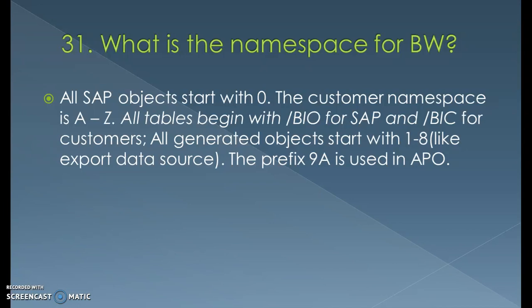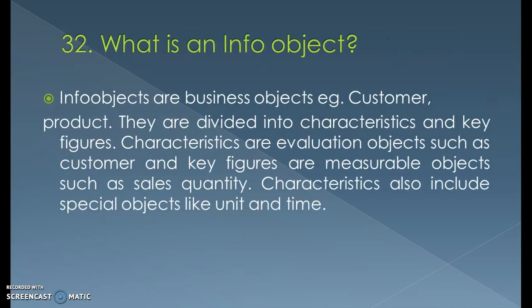All generated objects start with 1 to 8, like export data sources. The prefix 9A is used in APO — Advanced Planning and Optimizing. Info objects are business objects, for example customer and product. They are divided into characteristics and key figures. Characteristics are evaluation objects such as customer, and key figures are measurable objects such as sales and quantity. Key figures can contain only numbers, while characteristics can be alphanumeric. Characteristics also include special objects like unit and time.